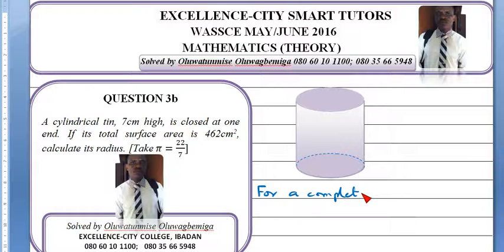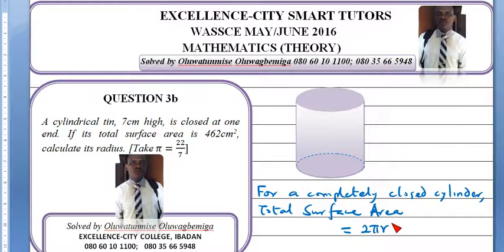For a completely closed cylinder, the total surface area would be equal to 2 pi r h plus 2 pi r square.